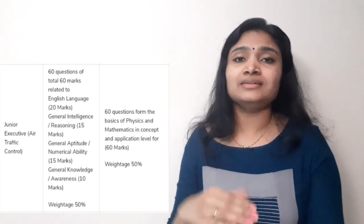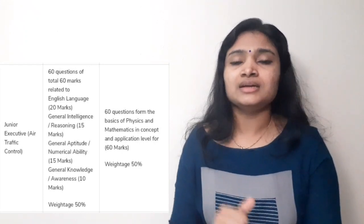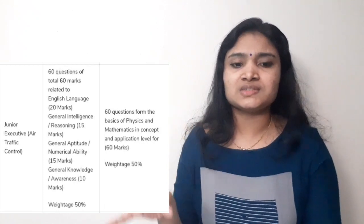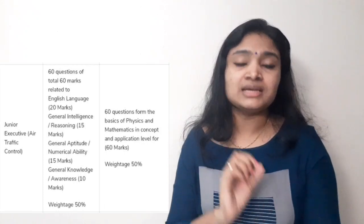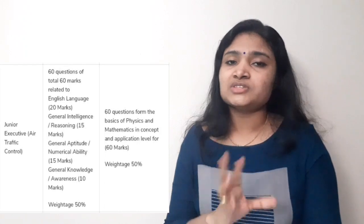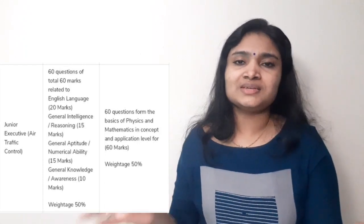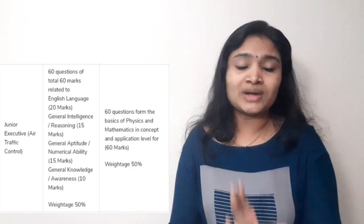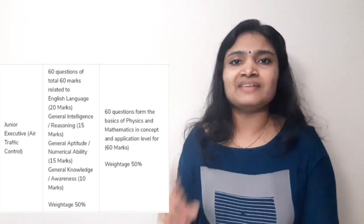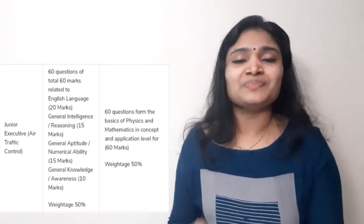Part B consists of Physics and Maths, and the questions will be from your 12th standard level. You can expect 12th standard level questions from Physics and Maths. There will be 60 questions in Part B. So the total exam pattern is 60 plus 60, that is 120 questions in 120 minutes. Each question carries one mark and there is no negative marking.